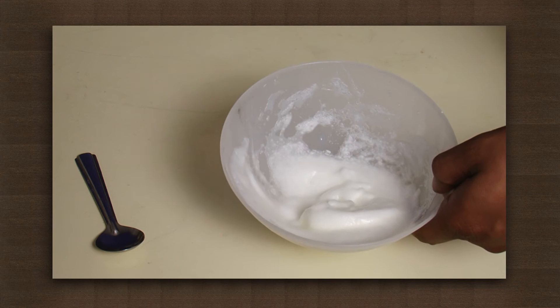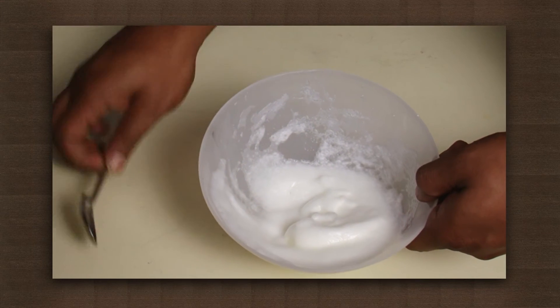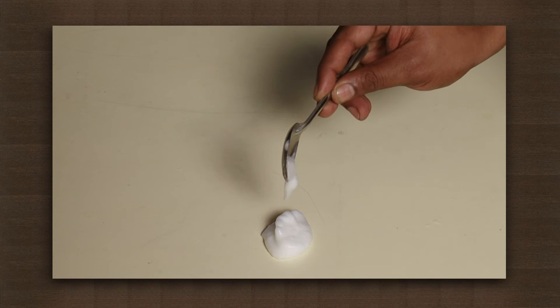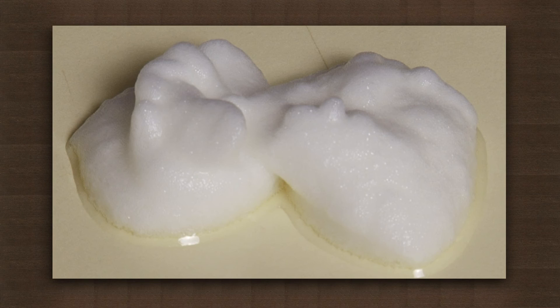With the help of a spoon, put some on the table. Look closely. It has lost its liquid character. It almost behaves like a solid by keeping its shape and size.